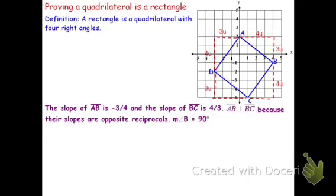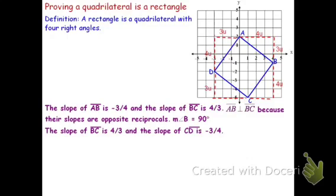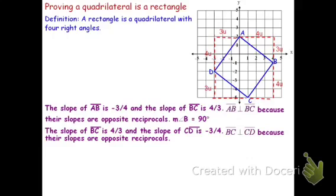Hence the measure of angle B is 90 degrees. Now I've shown I have one right angle; I need to show that I actually have four right angles in order to have a rectangle, so I've got three more to go. If the slope of BC is 4 thirds and the slope of CD is negative 3 fourths, I can conclude that those are perpendicular segments. So BC is perpendicular to CD because their slopes are opposite reciprocals. Therefore, the measure of angle C is 90 degrees.